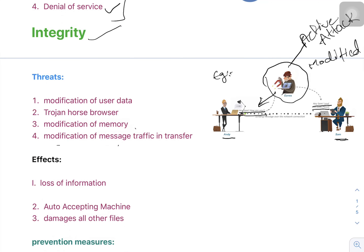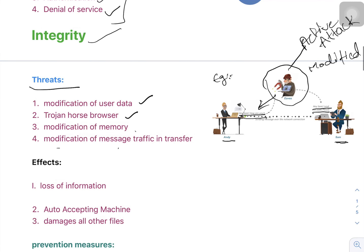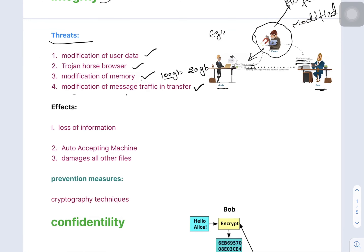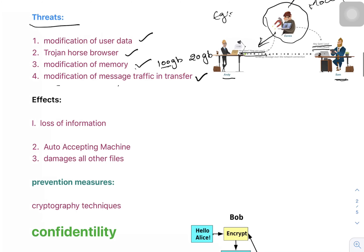The threats occurring in integrity are: modification of user data, Trojan horse browser (unwanted browsers), modification of memory — for example, when a client has 100 GB storage the attacker can reduce it to 20 GB — and modification of message traffic in transfer. These are the threats in integrity.